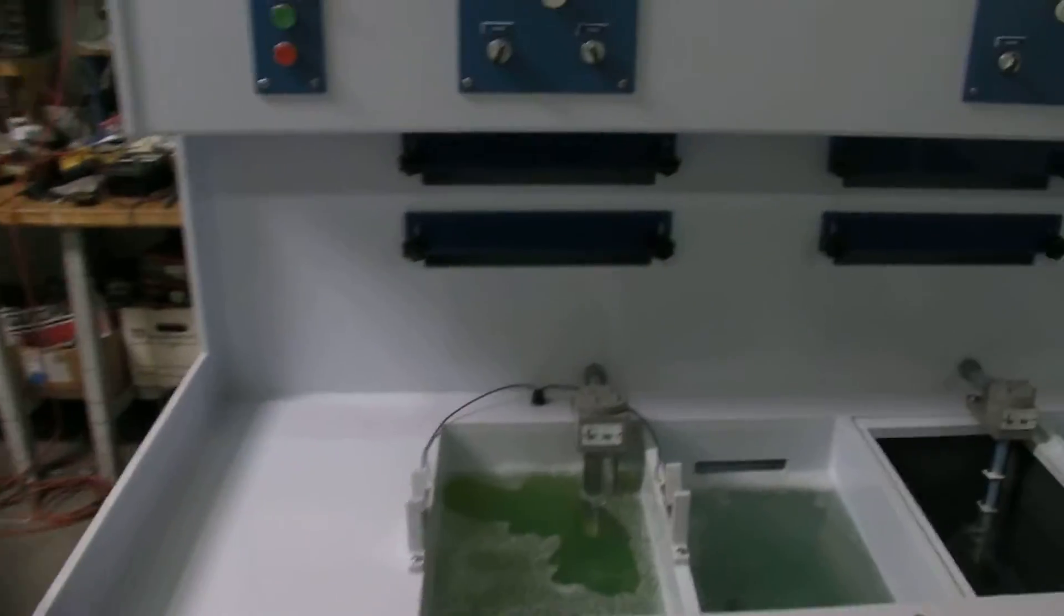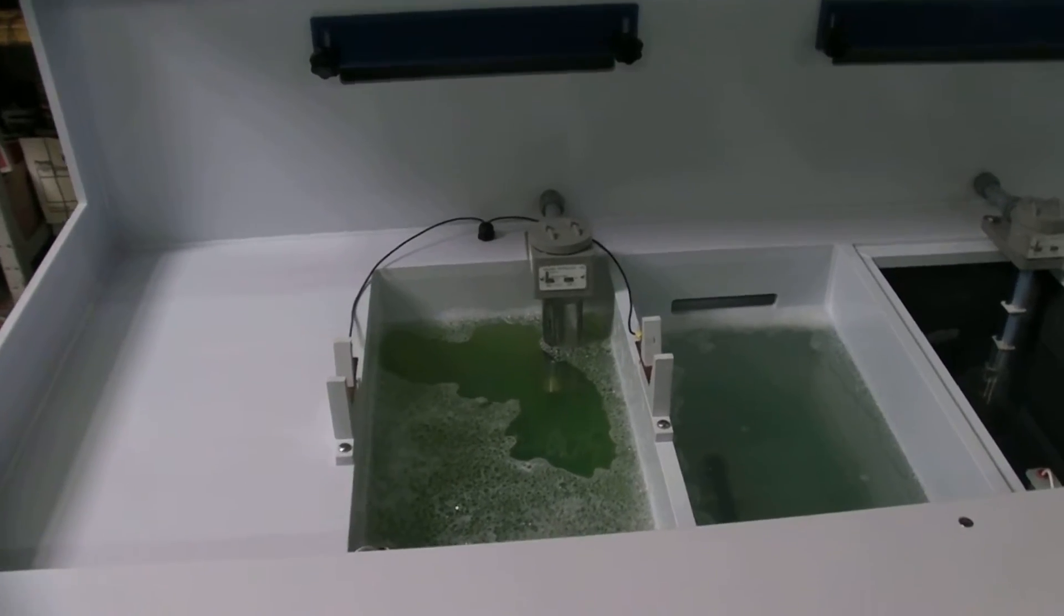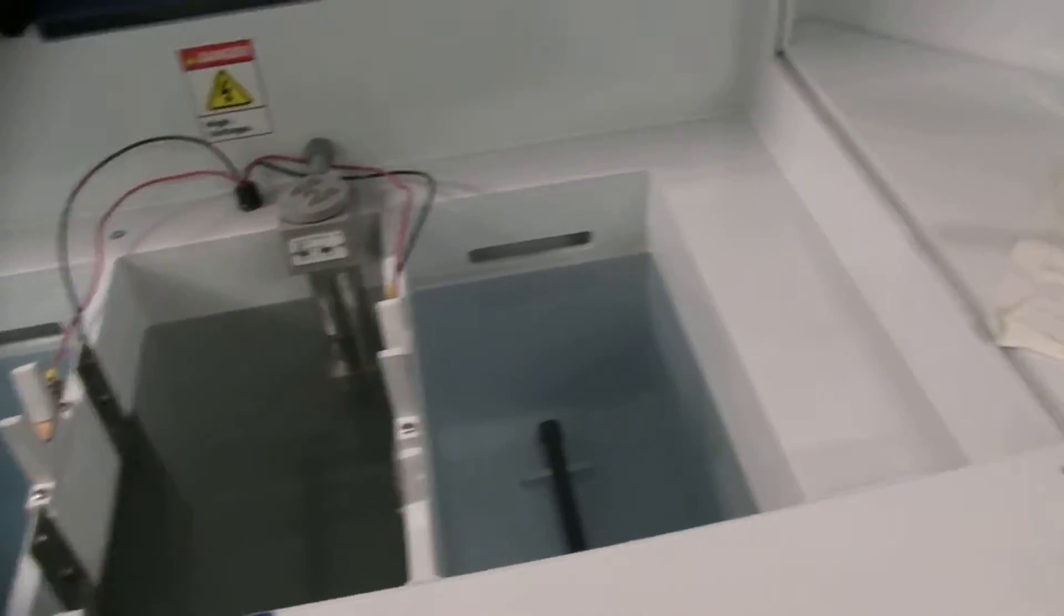So we set this line up as most of our normal lines are with a cleaner, an etch. This one has a color anodizing tank.